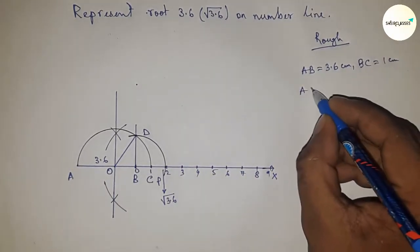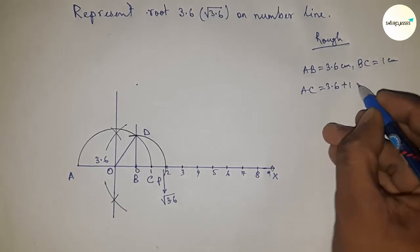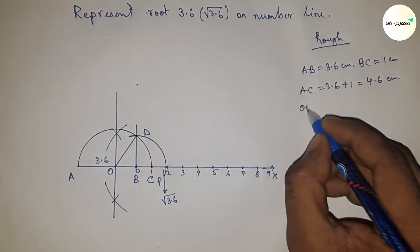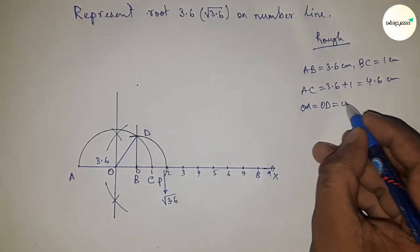So AC equals 3.6 plus 1, which is 4.6 centimeters. The radius OA, OC, and OD equals 4.6 divided by 2, so 2.3 centimeters.